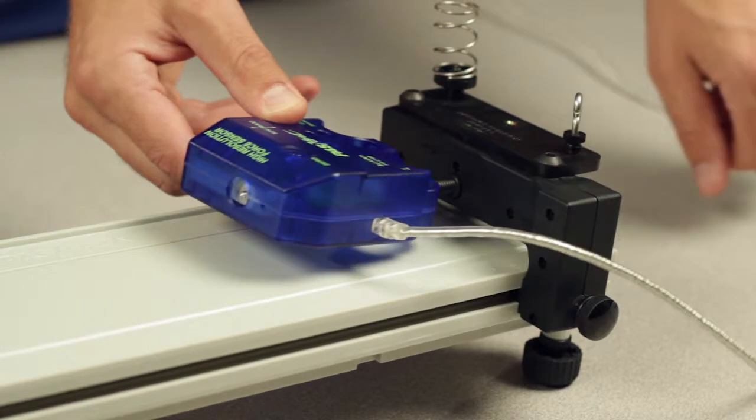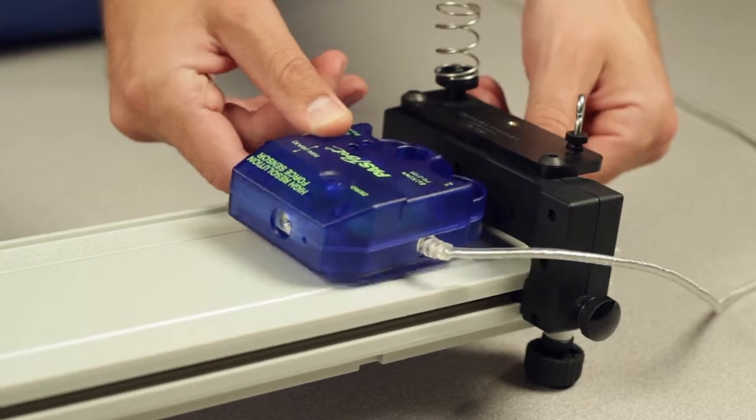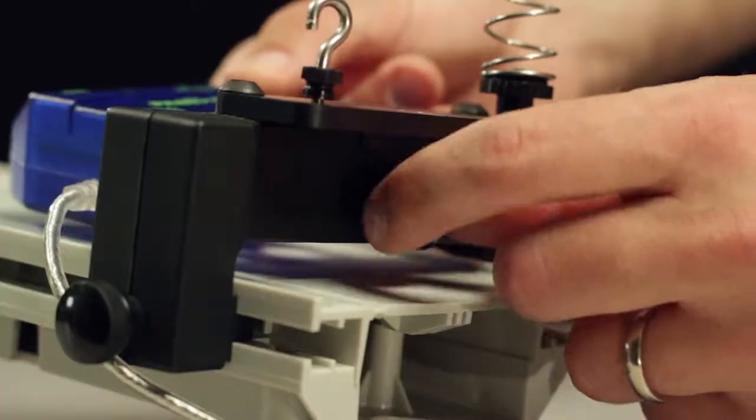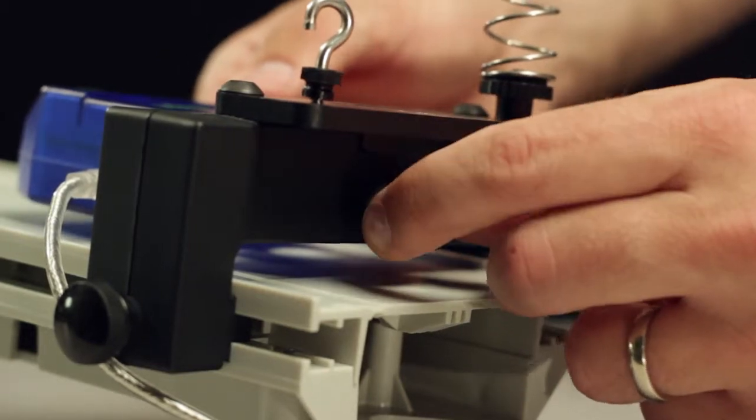PASCO force sensors can be mounted to the bracket by removing the thumb screw in the back of the force sensor and using the longer thumb screw in the bracket to firmly attach the sensor.